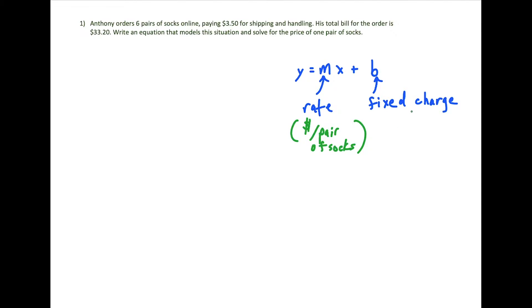And the fixed charge here represents the cost of shipping. Now to think about what x and y represent, x represents the number of socks that we're buying. And then y is the total cost.